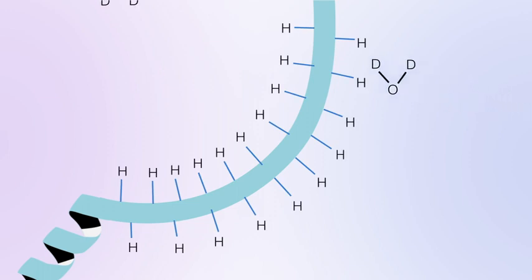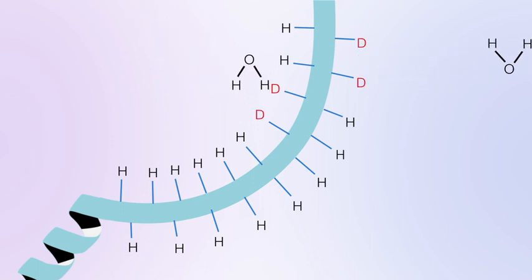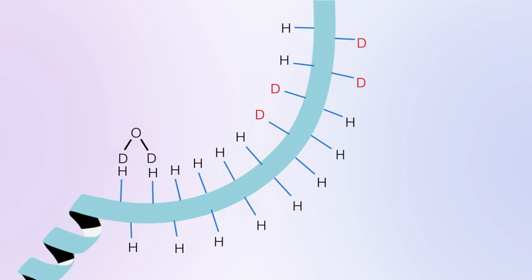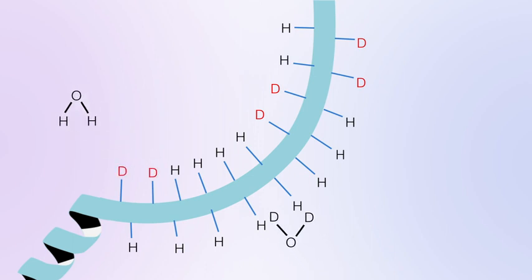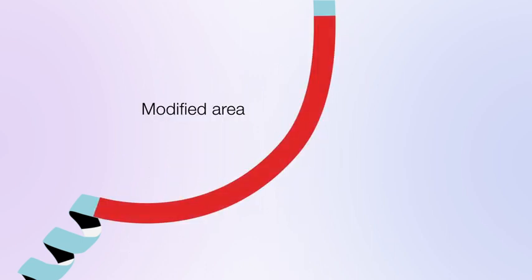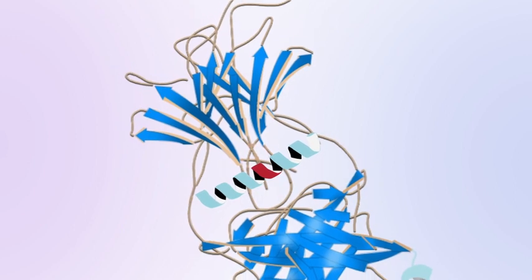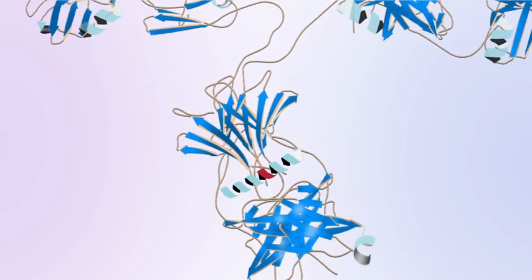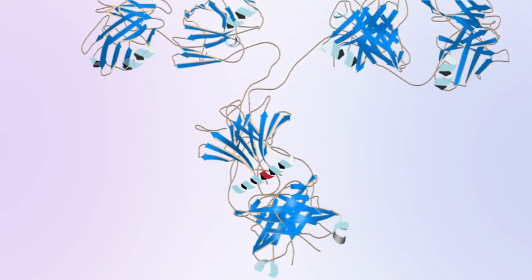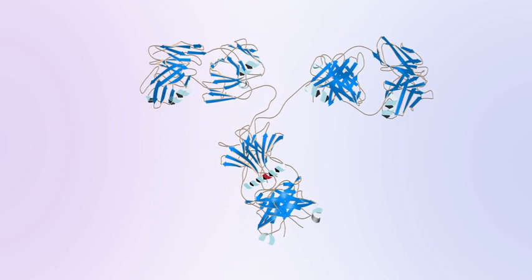Deuterium from heavy water, also called D2O, undergoes a chemical exchange type reaction in which covalently bonded hydrogen atoms are replaced by deuterium atoms without any catalyst, simply by dissolving the protein in heavy water. This is a time-dependent reaction. Consequently, hydrogen atoms exposed on the surface of the protein exchange first.